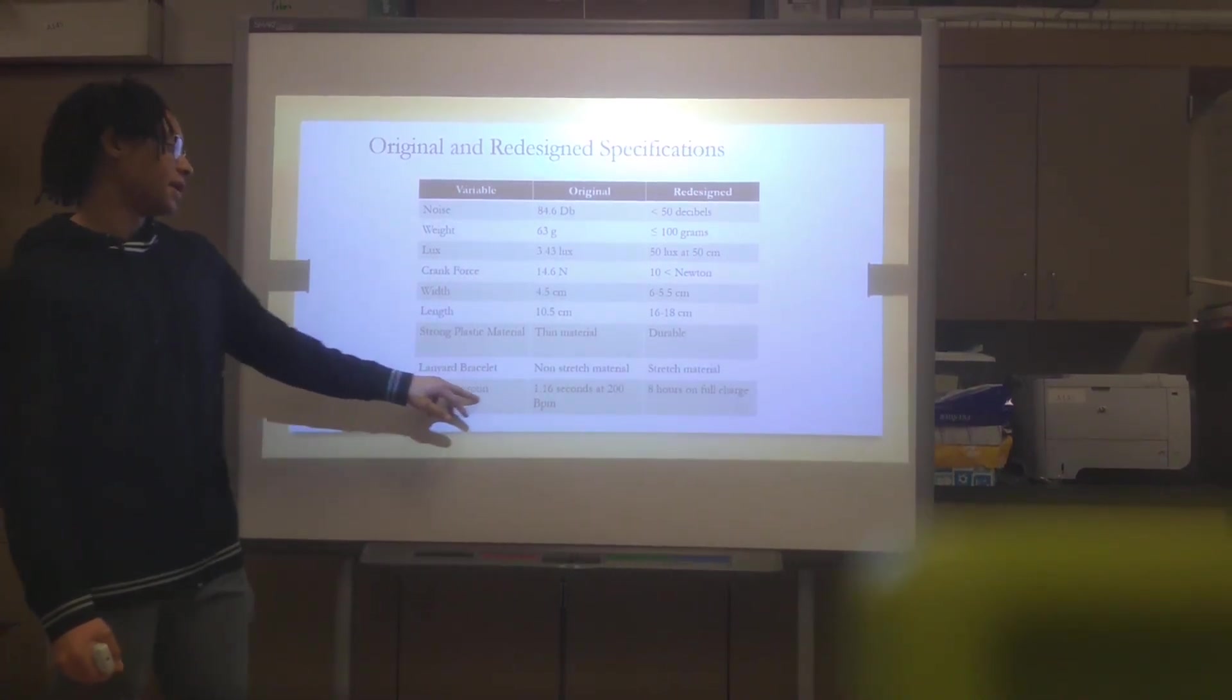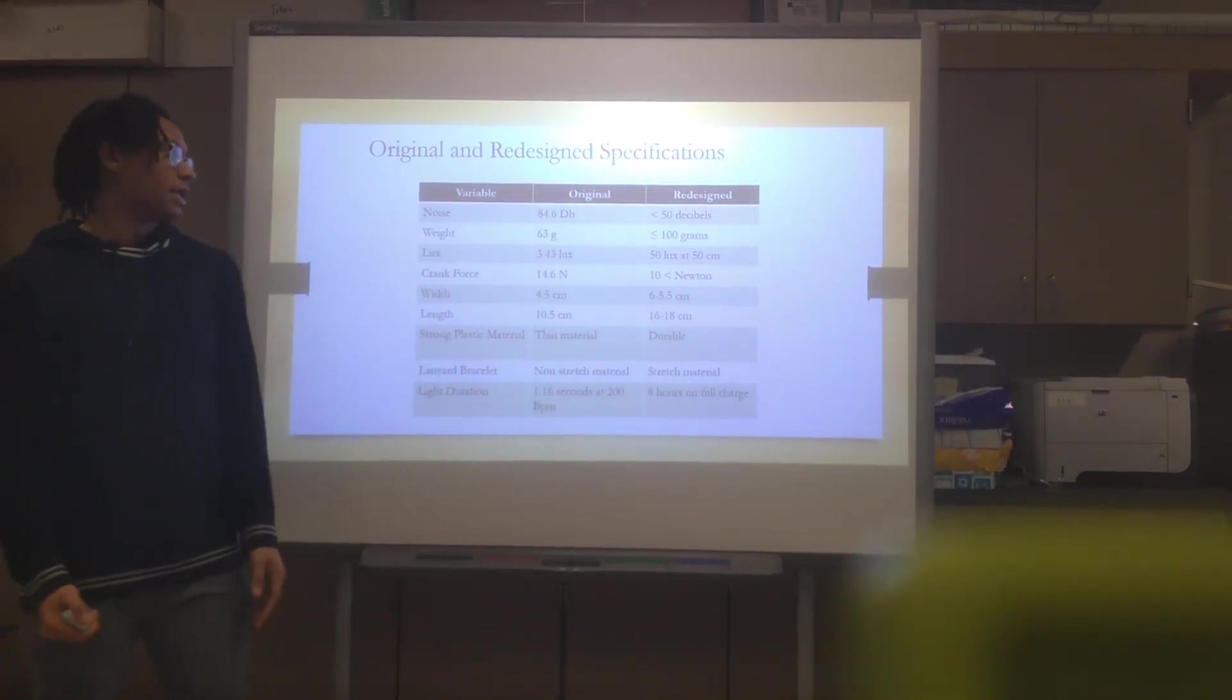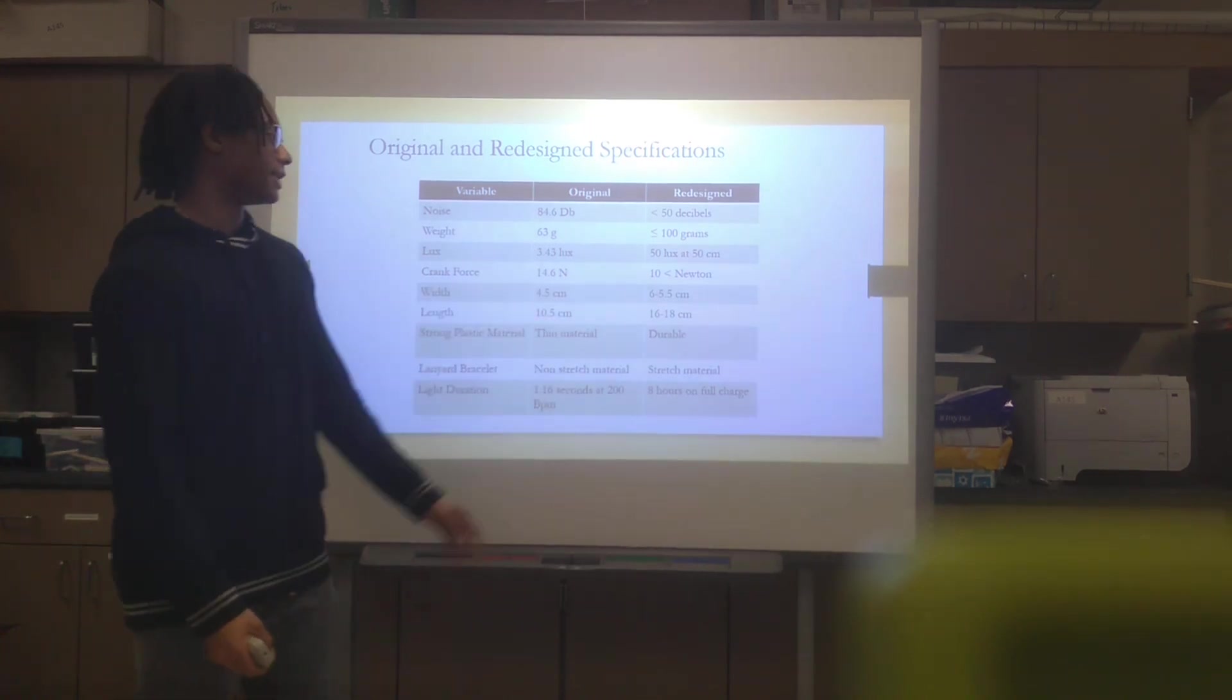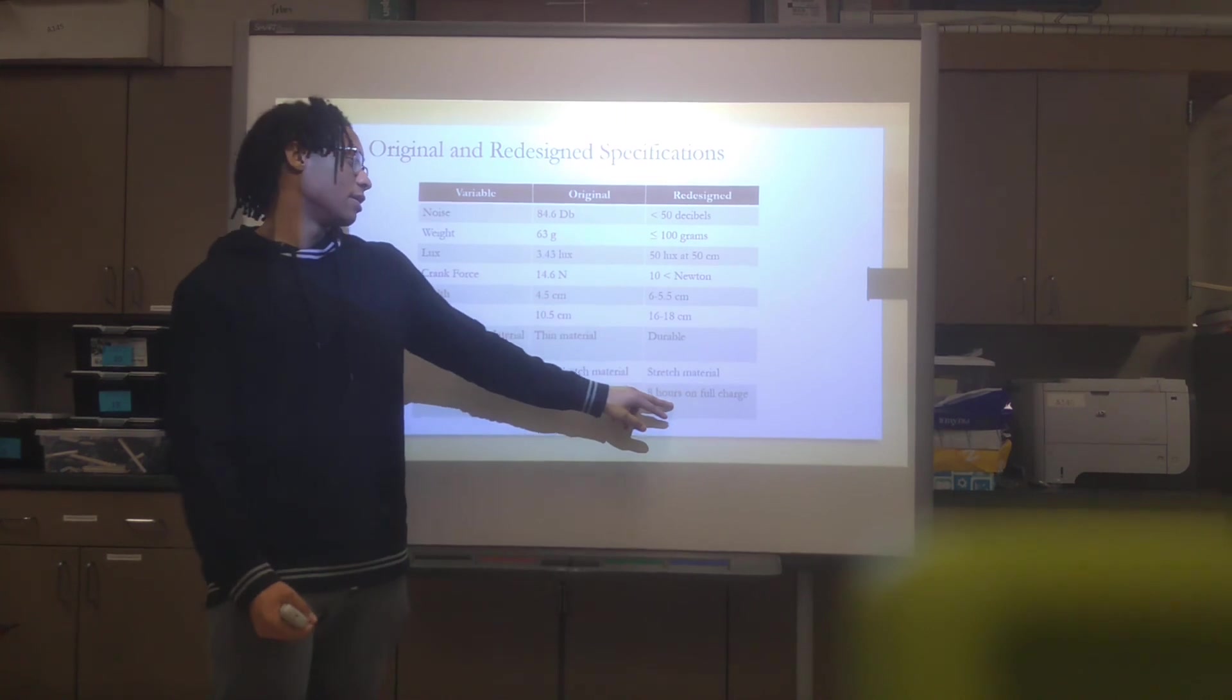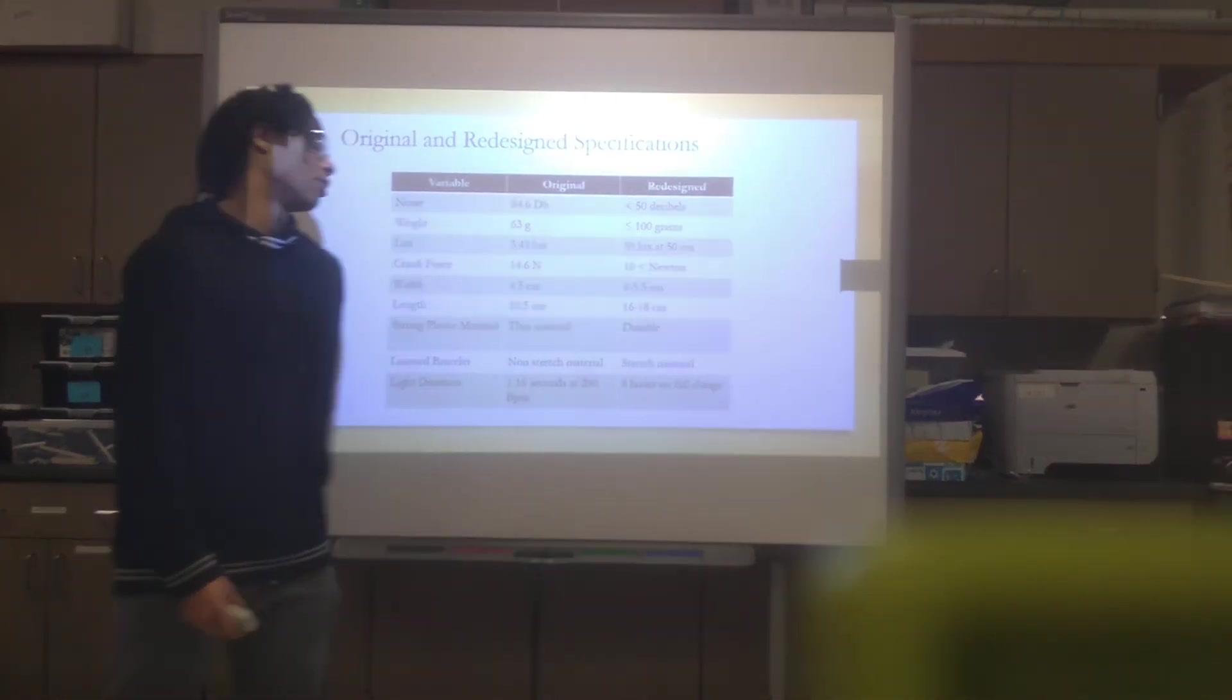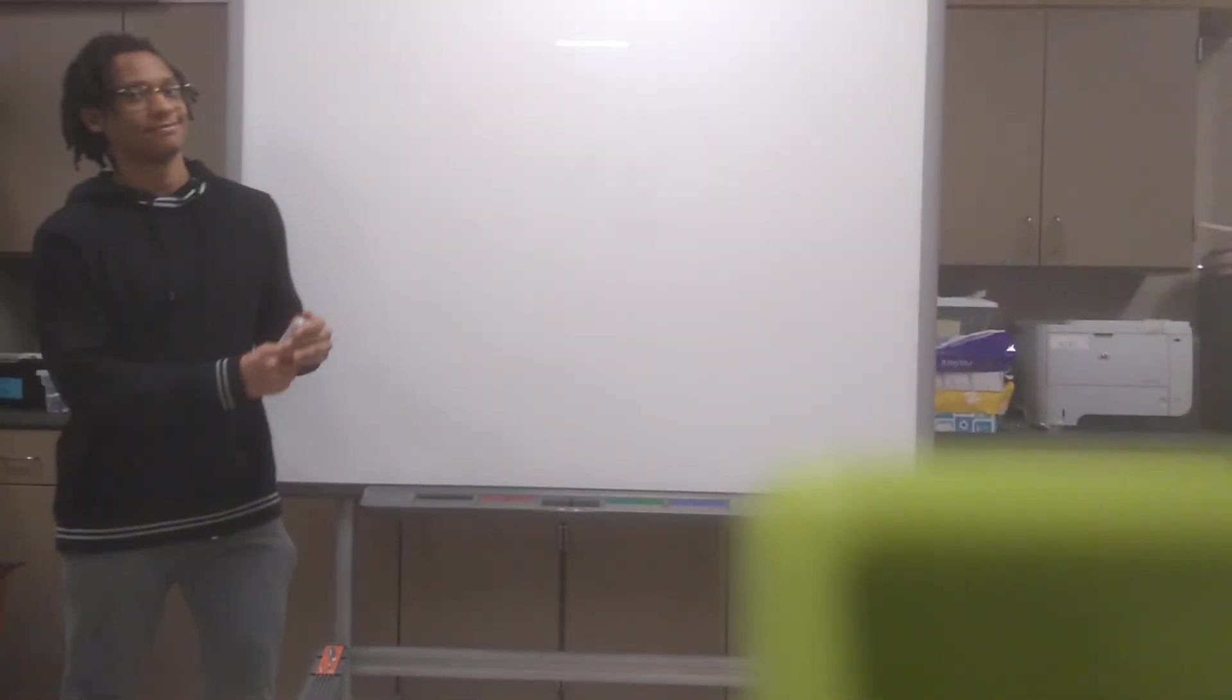The light duration for the flashlight is 1.16 seconds at 200 beats per minute. That's on the original whenever it was a dynamo flashlight. It is now a rechargeable flashlight with a battery that holds on a full charge for 8 hours. Thank you.